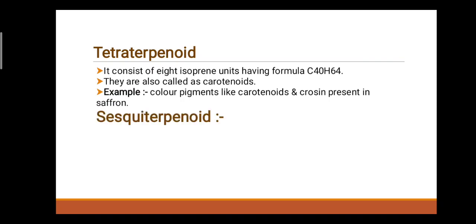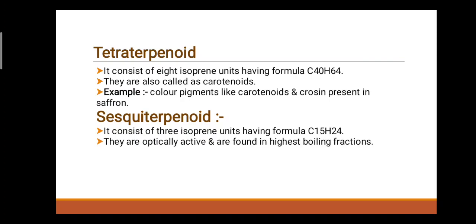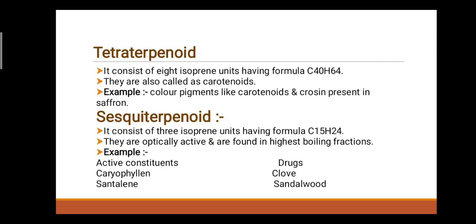Fifth class: Sesquiterpenoids. They consist of three isoprene units having formula C15H24. They are optically active and are found in the highest boiling fractions. Examples — first active constituent: Caryophyllene, drugs: clove. Second: Santalene, drugs: sandalwood. Third: Gossypol, drugs: cotton plant.